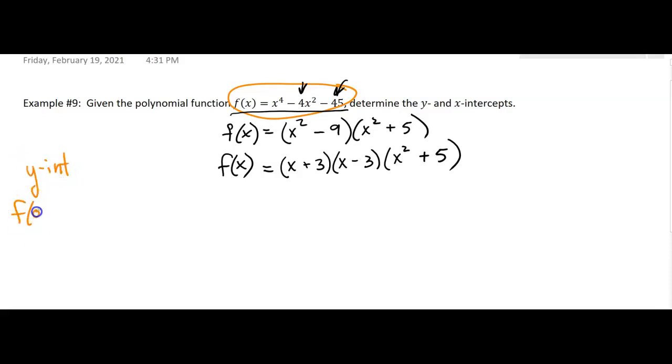So f of 0, 0 to the 4th, minus 4, 0 squared. I don't know that you have to write this out, but you certainly could. That's going to be a 0, that's going to be a 0. Looks like I'm getting negative 45.